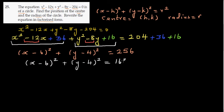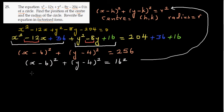Comparing this form with the standard form, you can say the center is 6 comma 4 and the radius is 16 — wait, the radius is 4, since r squared equals 256 means r equals 16. Comparing directly: center is 6 comma 4 and radius is 16.